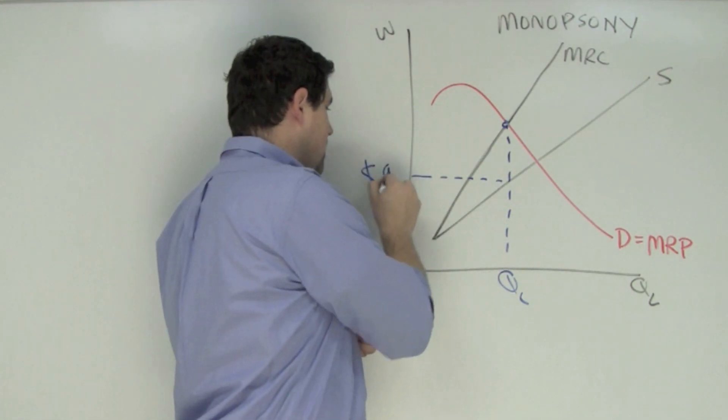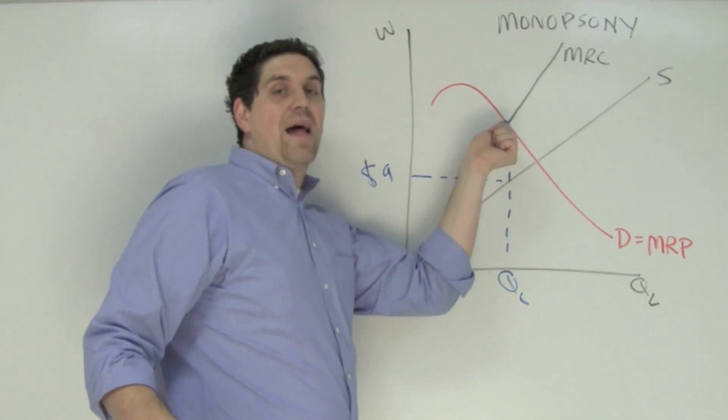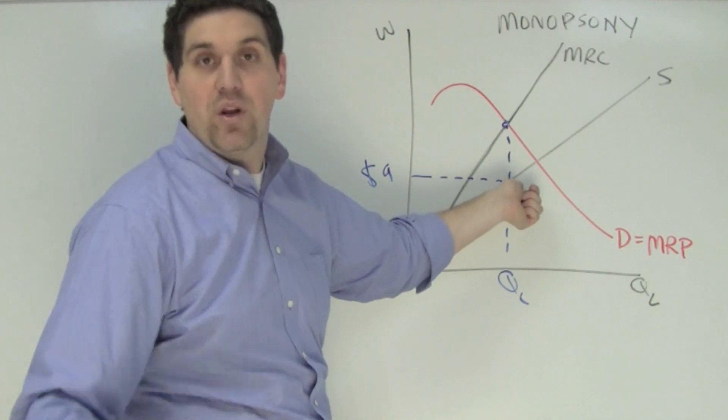In this question it is $9. That's the wage. They're not going to pay the worker the marginal resource cost, because even though that's the cost to hire that worker, the worker is willing to work for $9. I'm going to pay how much you're willing to work for.